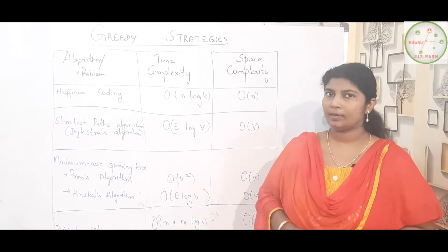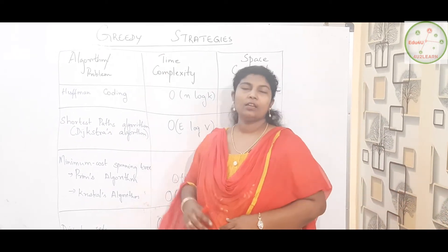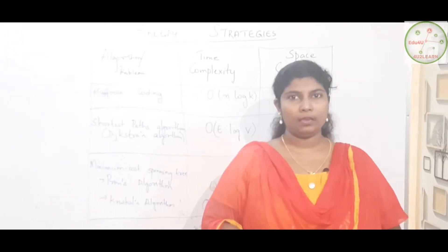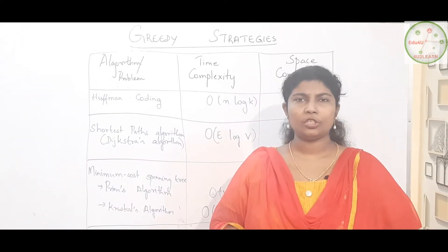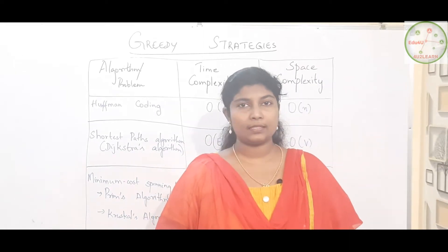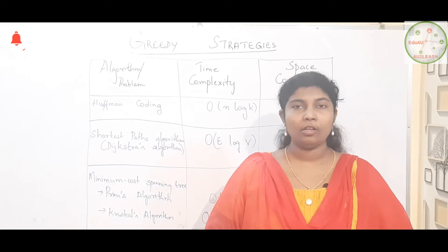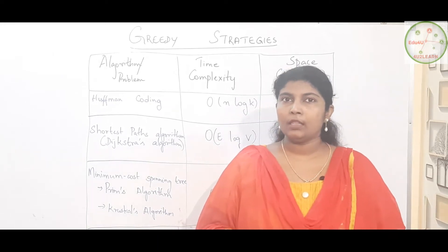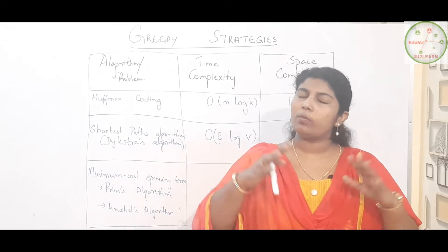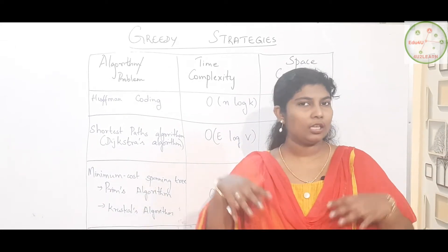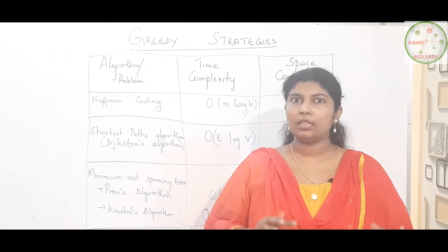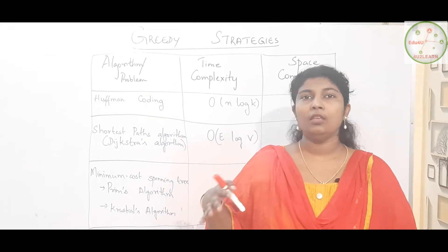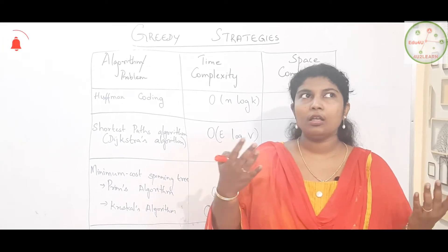Today's part is going to be only on how the time complexity and space complexity are being derived. A brief introduction about greedy strategy: before this we have seen exhaustive search, which is a method where all the possibilities are taken and we try to pick out the best optimal solution. It takes a very long time and the complexity also increases because we do all possible searches.